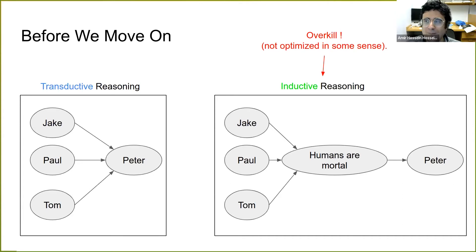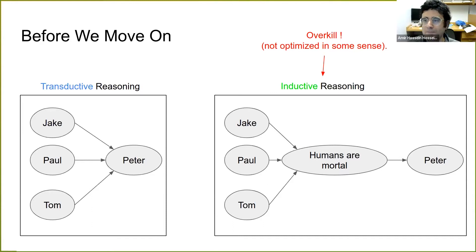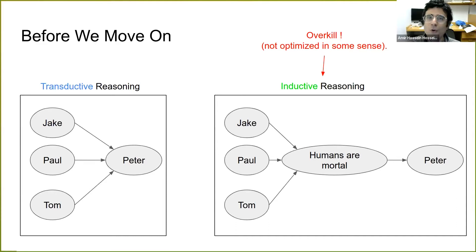The rule 'humans are mortal' helps explain why you made the inference about Peter from knowledge about Jake, Paul, and Tom. Every logician I know would tell you that. It seems to me you're motivating the creation of explanations by throwing them away at the outset and saying generating a covering rule is too expensive. I am not — I am completely on your side that we solve problems this way. But I think the next observations I'm going to show you will be very interesting.